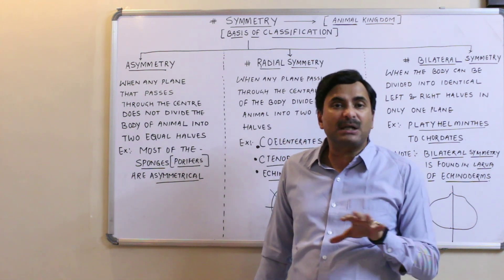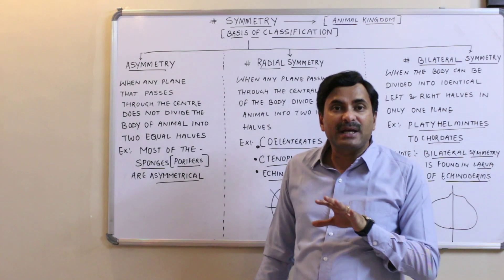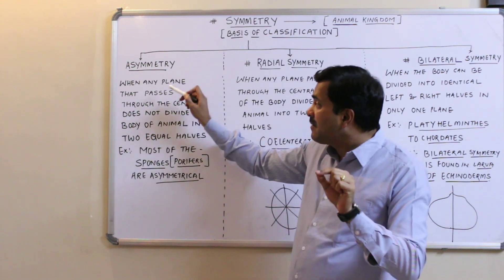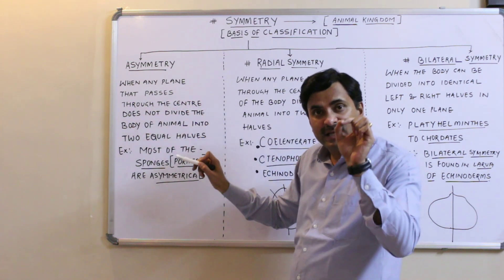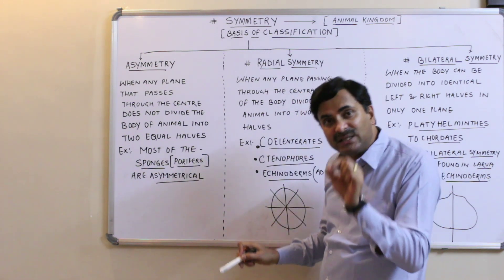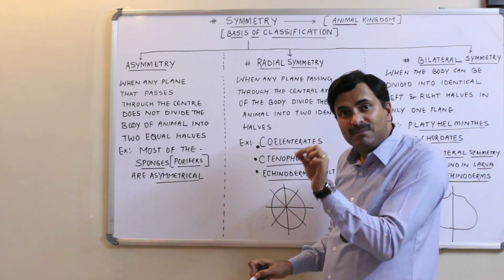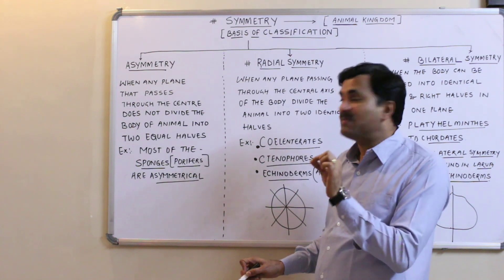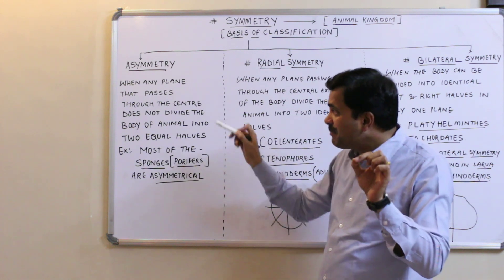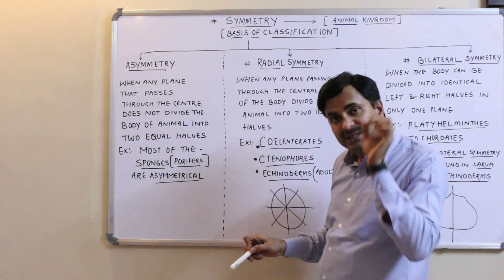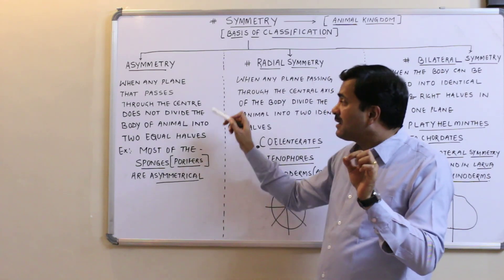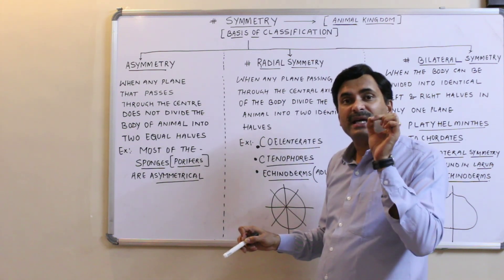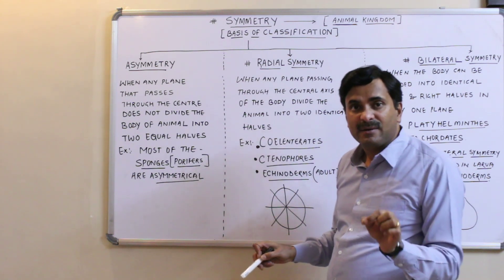Asymmetry means the organism is not having any kind of a particular symmetry — the organisms are asymmetrical. When any plane that passes through the center does not divide the body of the animal into two equal halves, then such type of symmetry is called asymmetry.